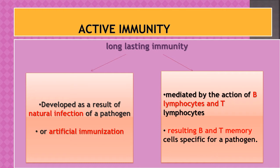Active immunity is a long-lasting immunity. It involves the T lymphocytes and B lymphocytes, which we dealt with in detail in acquired immunity. This immunity is developed as a result of a natural infection by a pathogen. When a pathogen such as a bacterium or virus enters your body, it stimulates an immune response. Artificial immunization can also be done — we'll be talking about that in detail.